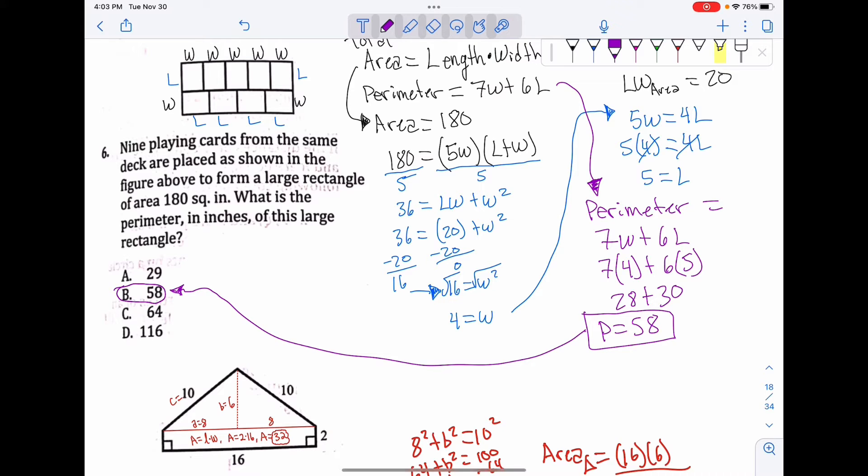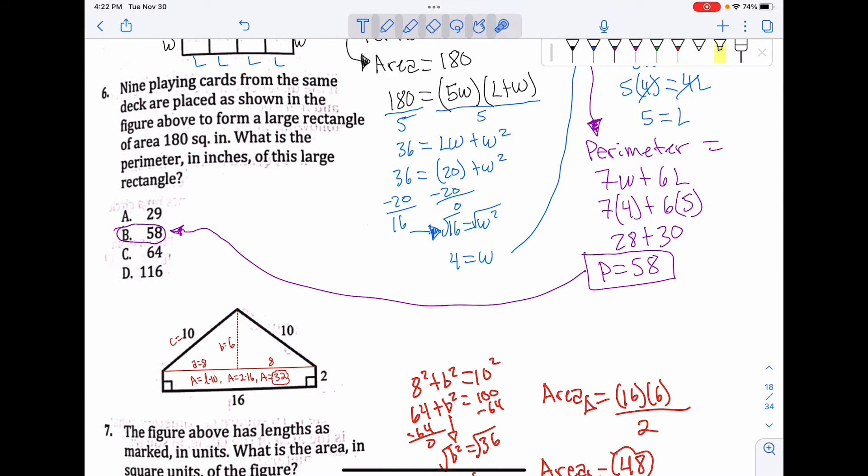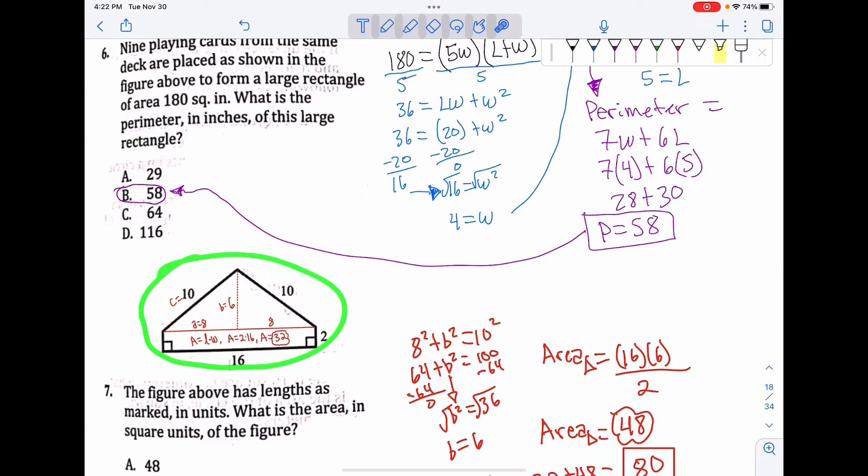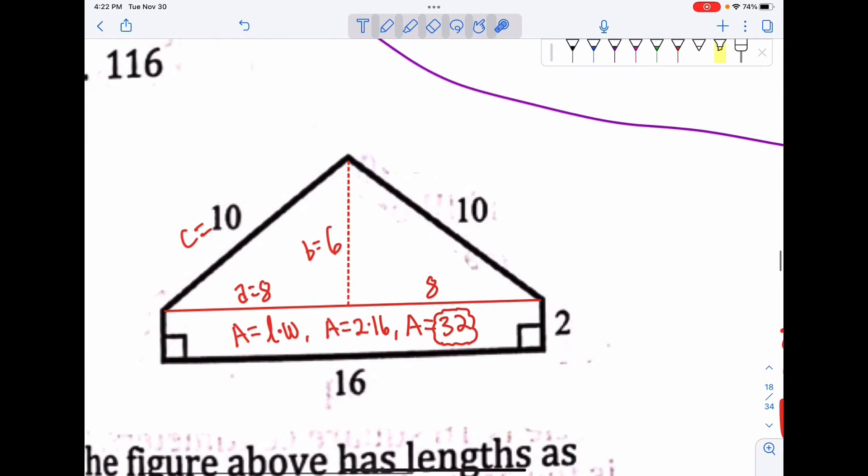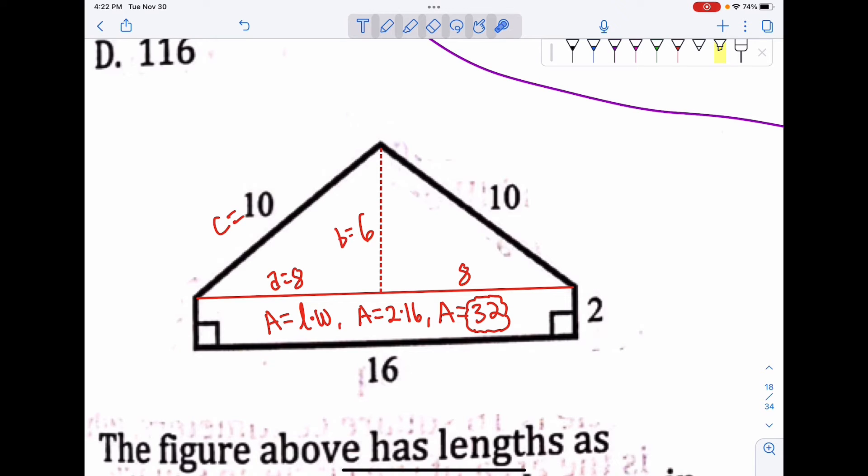The next one we have two shapes: a rectangle and a triangle. The figure above has lengths as marked in units. What is the area in square units of the figure? We want to find the whole area. The rectangle is easy: area equals length times width. My length is 16 and my width is 2, so it's 32.